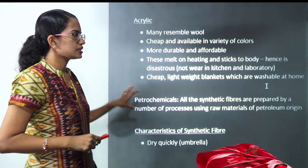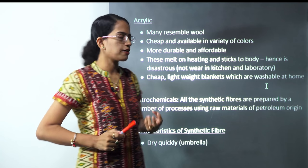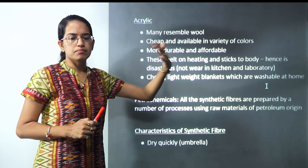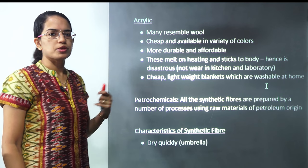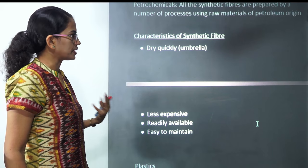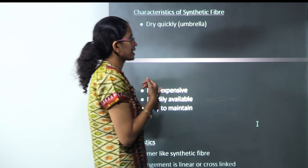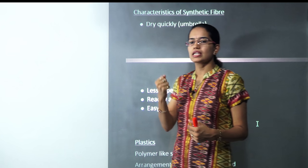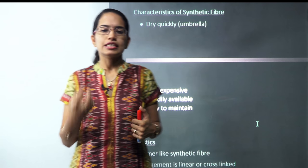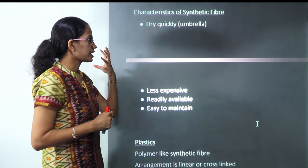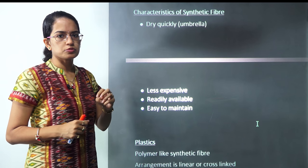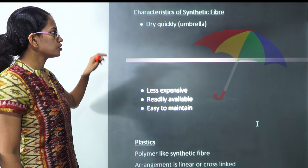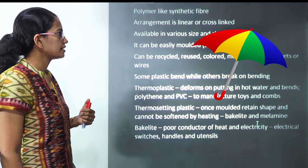Similarly, we have petrochemicals — synthetic fibers derived mainly from the process of making petroleum. Now, the characteristics of synthetic fibers: they are light, cheap, and less expensive. They are readily available and very easy to maintain with fewer wrinkles and crisp to use. An umbrella is a good example of synthetic material.